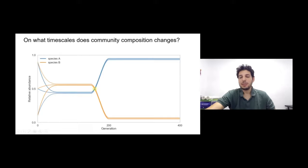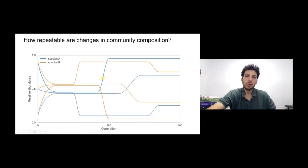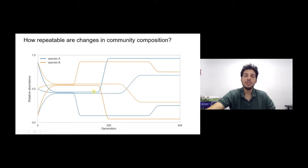We also don't know when changes occur, how repeatable they are. Evolution has a random component — mutations arrive at random times and in random locations in the genome — so it could be that changes are not repeatable at all, and each replicate ends up with a very different composition, which would make predictions much harder. So we first wanted to ask: over what timescales do changes occur, and how repeatable are they?